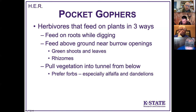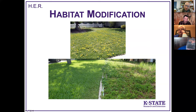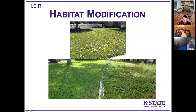Pocket gophers are herbivores that feed on plants in three ways: feeding on roots while digging, coming above ground to feed near burrow openings on green shoots and rhizomes, and pulling vegetation down into the tunnel from below. They prefer forbs and really like alfalfa and dandelions. For habitat modification to exclude pocket gophers from a yard, don't have a weedy yard full of broadleaf plants — those look like prime habitat to a pocket gopher. A yard that's mostly grass without forbs is not good pocket gopher habitat, so a well-kept lawn helps keep them out.